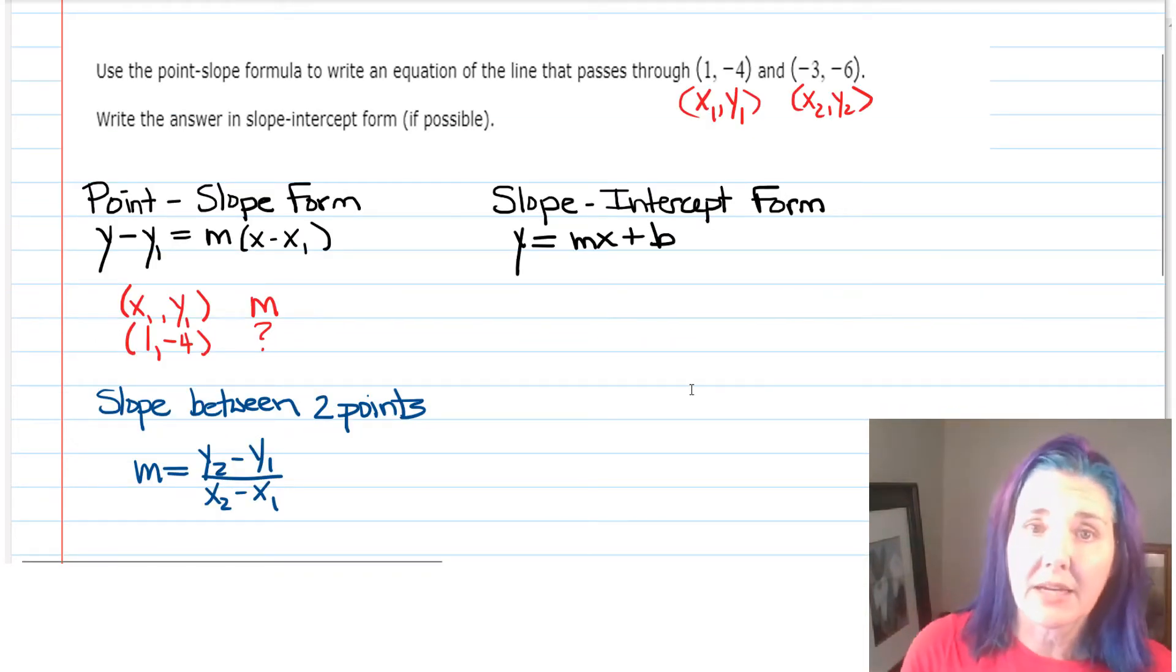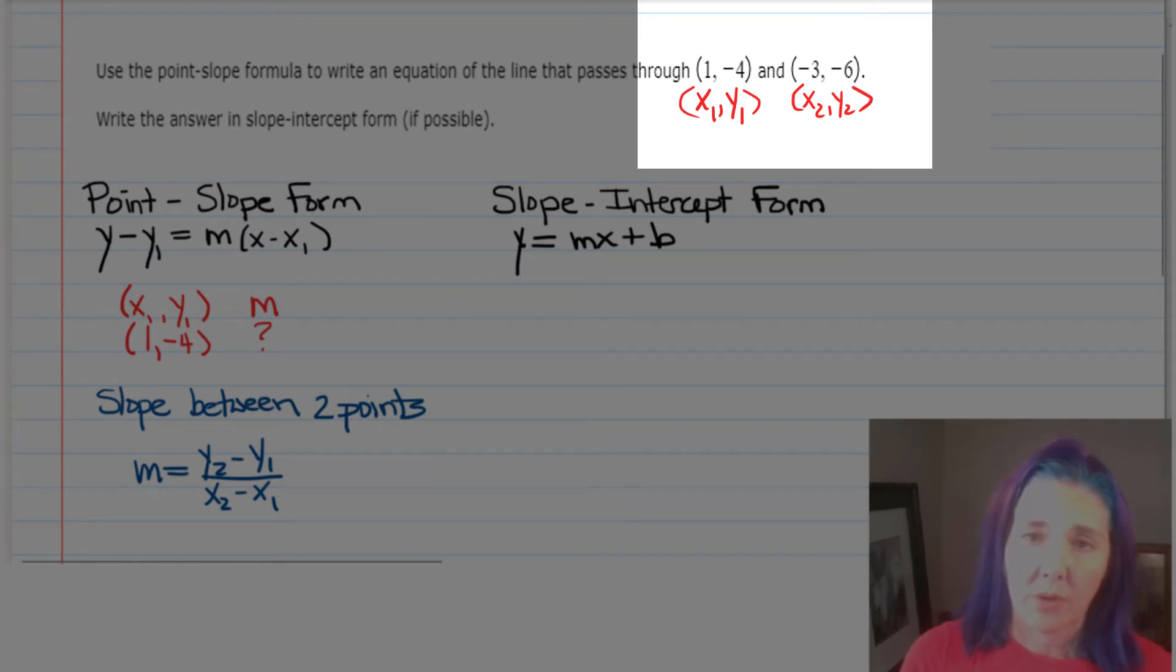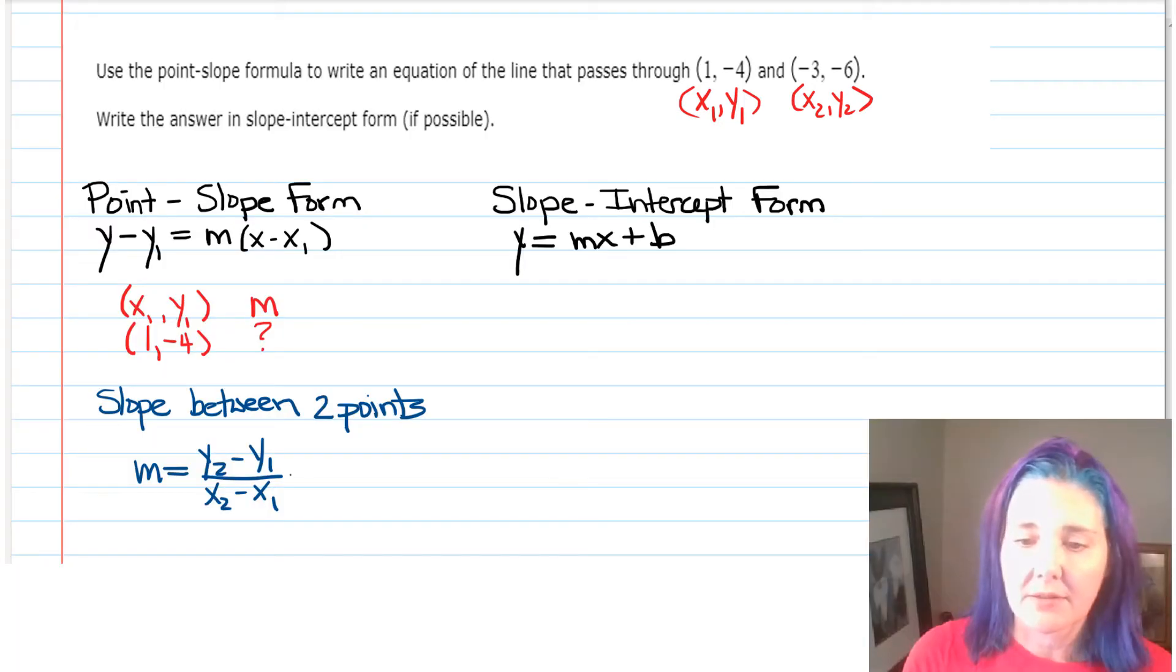Really, that's okay, because we know that we can find the slope between any two points using the formula, m = (y₂ - y₁)/(x₂ - x₁). So, that's what we're going to do. Find the slope first, and then go back and write the equation of the line. I've decided to let (x₁, y₁) be (1, -4), so I'm going to let (x₂, y₂) be (-3, -6).